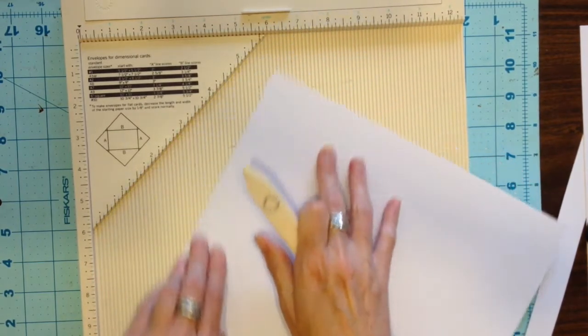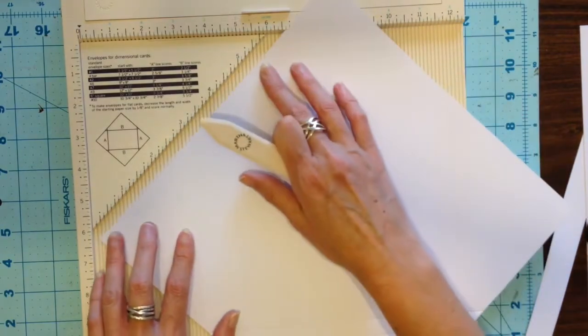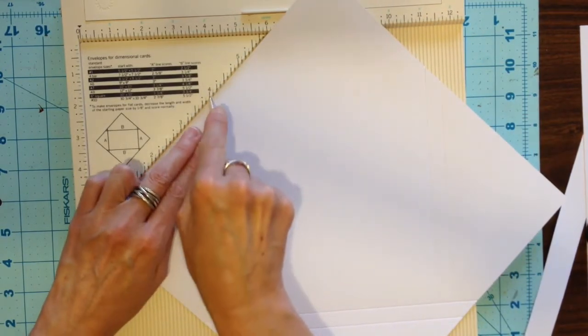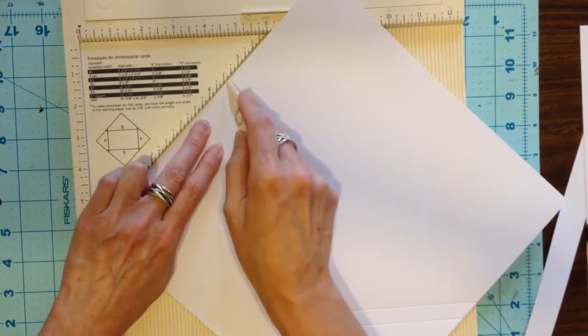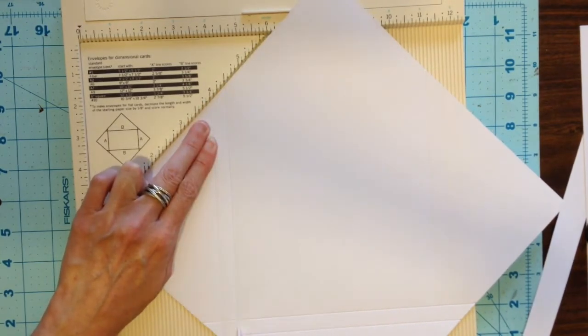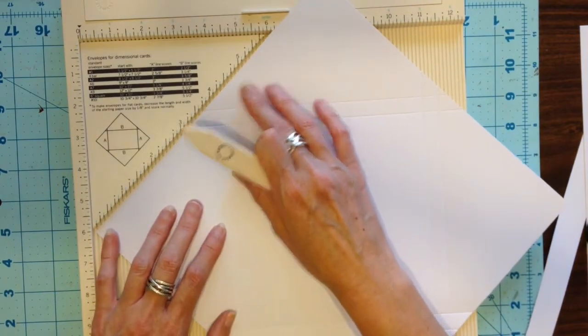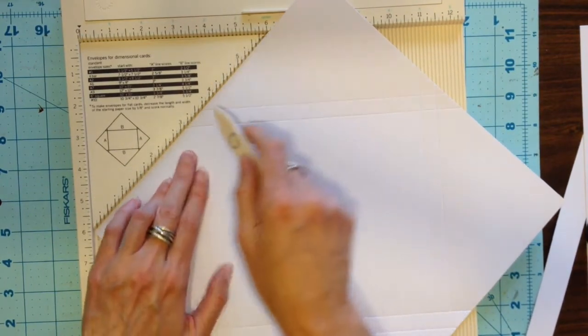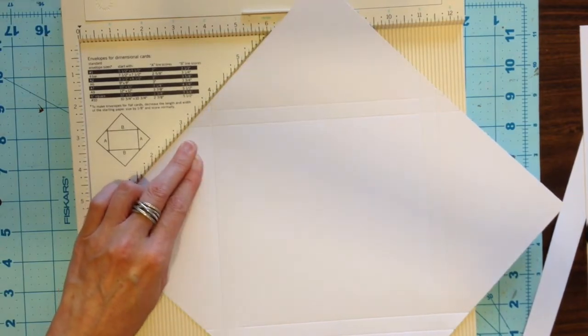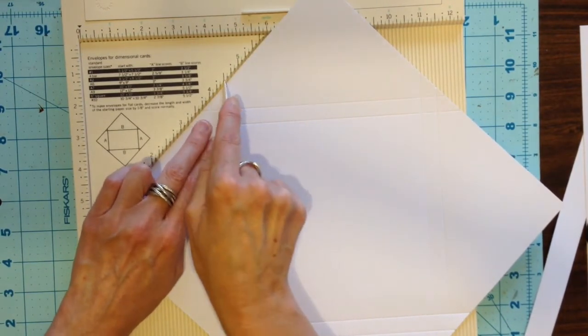Rotate your paper once more placing it against that diagonal edge, four inches, four and a half inches. And for the final score again against that diagonal edge, four inches and four and a half inches.